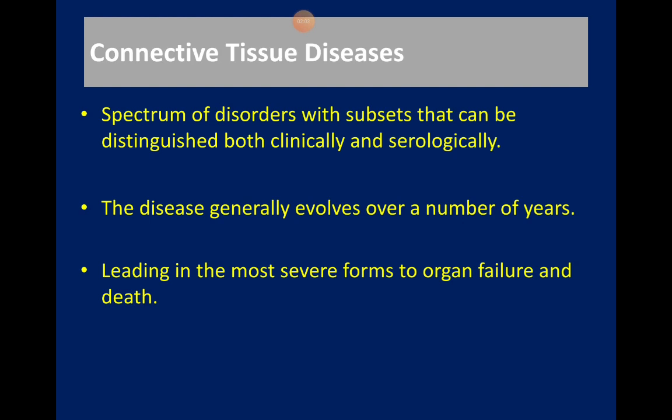Connective tissue diseases are subsets that can be distinguished clinically and serologically. Findings can evolve over a number of years — a patient with lupus may start with Raynaud's, some skin rash, arthralgia, and positive ANA, but in a few weeks or months they might develop further complications such as lupus nephritis or interstitial lung disease. Organ failure can happen and there are variable mortality rates according to the condition and the severity.